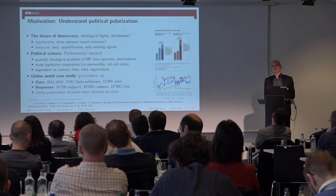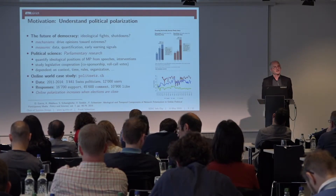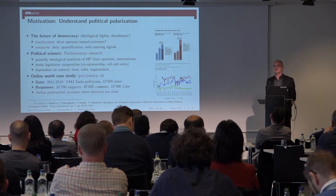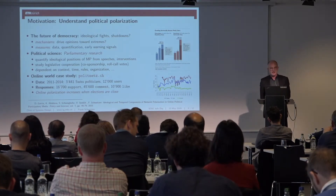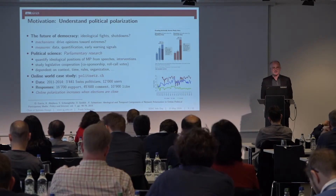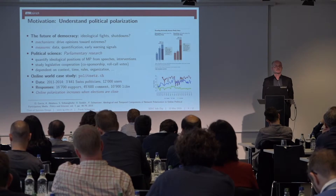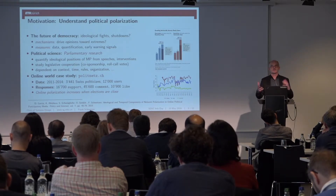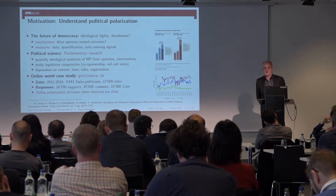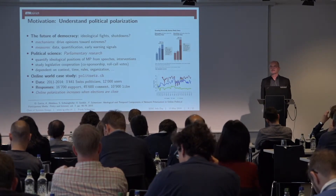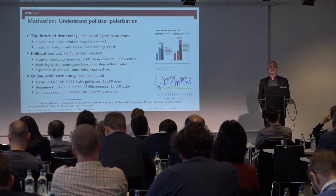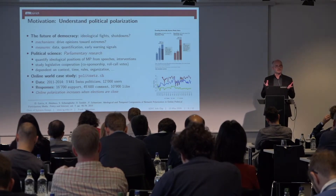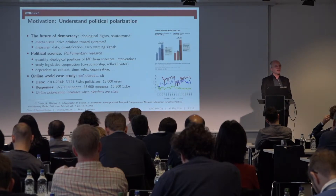What do we have available? We have online data, for example. Politicians have their own Facebook — it's called PolitNets. You can go there and talk to your own politicians. We analysed that dataset: there were 2,400 different politicians and about 12,000 different users. We analysed what they are talking about, how they support each other, and so forth. This is the Swiss parliament and local governments. When we look into this online data, we already see political polarisation.